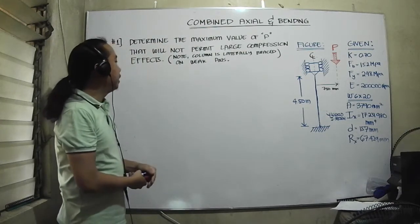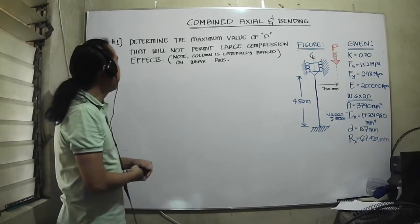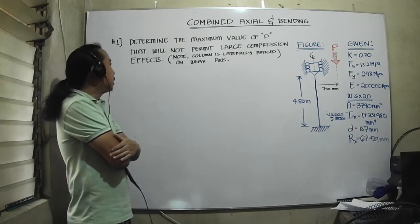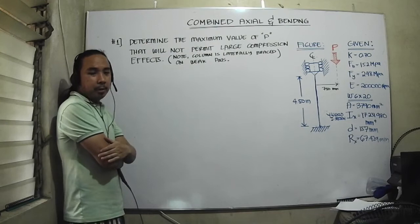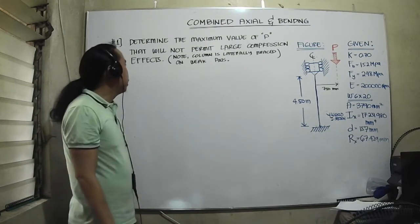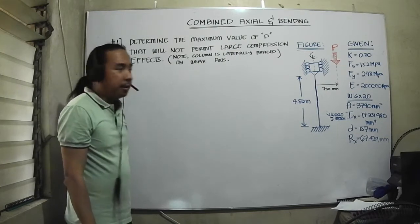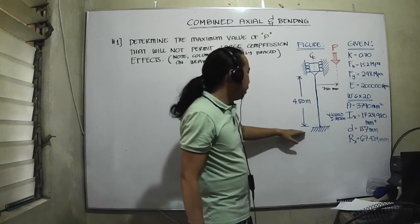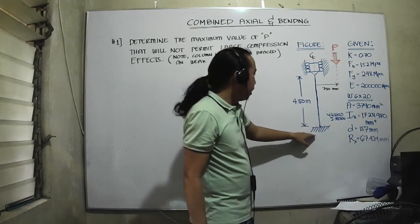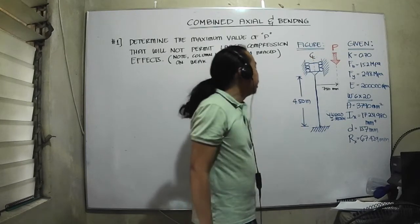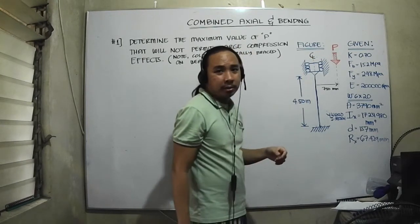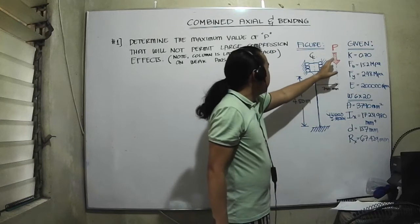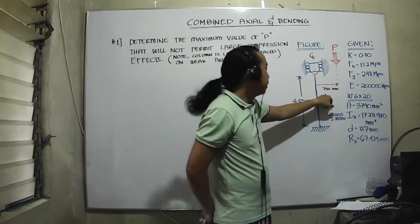In this video we'll be solving a sample problem where we need to determine the maximum value of P that will not permit large compression effects. We also need to take note that the column is laterally braced on its weak axis. We have a figure in which one end is a fixed support, the other end is a roller type support, and a force is applied at an eccentricity of 750.